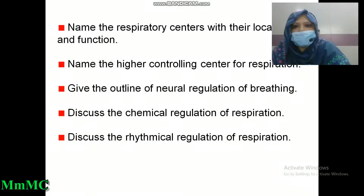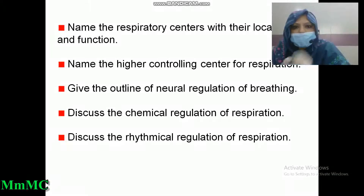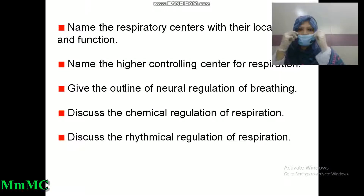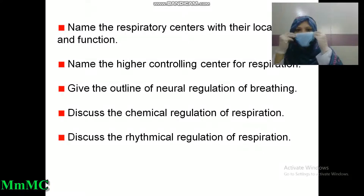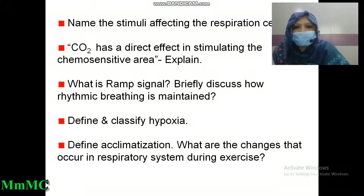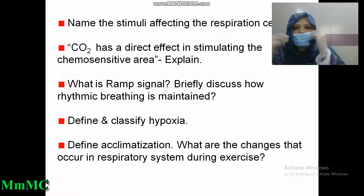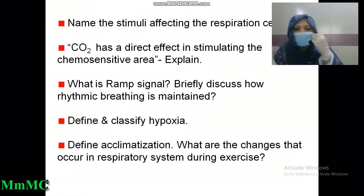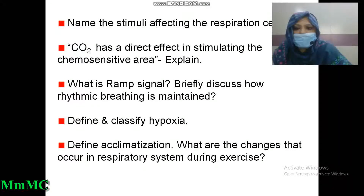Name the respiratory centers with their location and function. Name the higher controlling centers for respiration. Give the outline of neural regulation of breathing. Discuss the chemical regulation of respiration. Discuss the rhythmical regulation of respiration. Name the stimuli affecting the respiratory center. Carbon dioxide has a direct effect in stimulating the chemosensitive area. What is the REM signal? Briefly discuss how rhythmic breathing is maintained. Define and classify hypoxia. Define acclimatization. What are the changes that occur in the respiratory system during exercise?